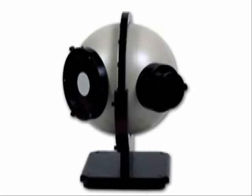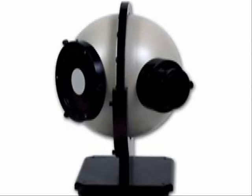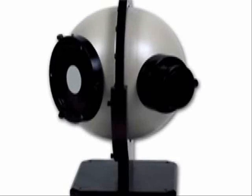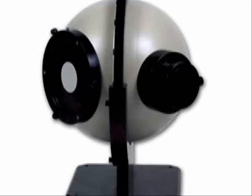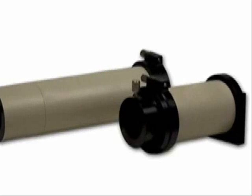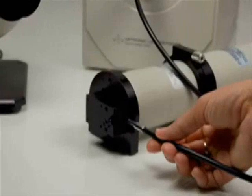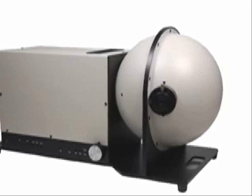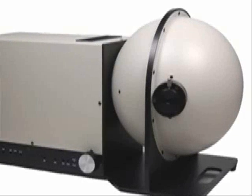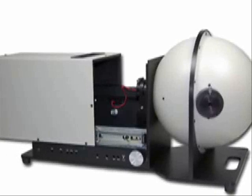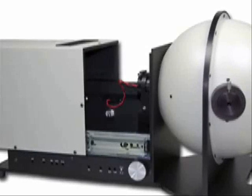A host of accessories are available for the OL-770, many which meet CIE standards, such as the OL-IS-670 Integrating Sphere used for making total spectral flux measurements, the OL-15AB LED Receptor for measuring intensity of LEDs, and the OL-1272 LED Partial and Total Flux Integrating Sphere, designed specifically to meet CIE 127.2 measurement recommendations for total luminous flux and partial LED flux measurements.